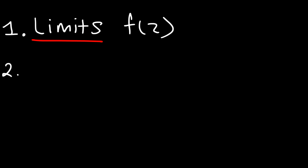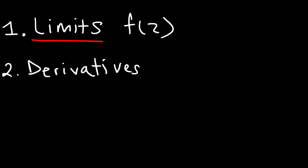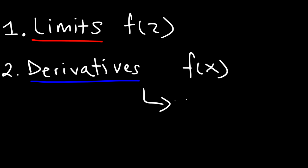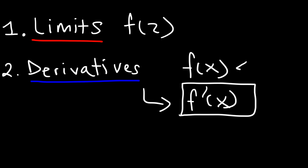The second area of calculus that you want to know is derivatives. Derivatives are functions that give you the slope of an original function at some value. So if I have some function f(x), the derivative of f(x) is known as f prime of x. This function will tell me the slope of this function at some x value — it gives me the slope of the tangent line. Derivatives are very useful for calculating rates of change.